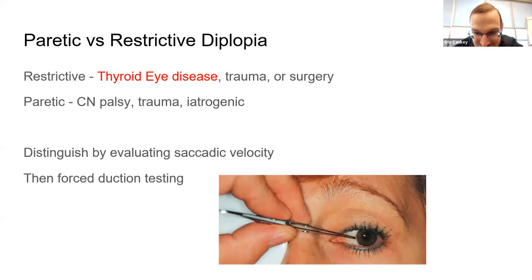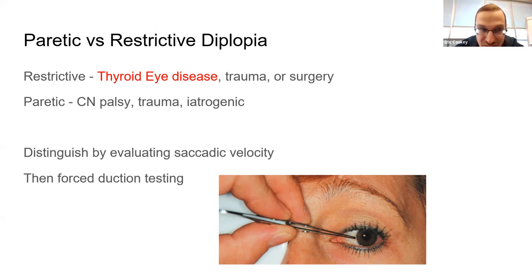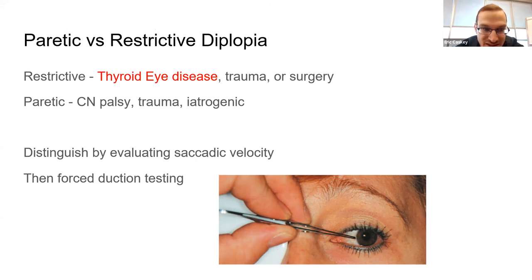In the real world, it's important to think of restrictive causes as well, such as thyroid eye disease, which is very common. You can distinguish palsies from restrictions by looking at saccadic velocity, which will be slowed in palsies. Forced ductions are necessary if needed.